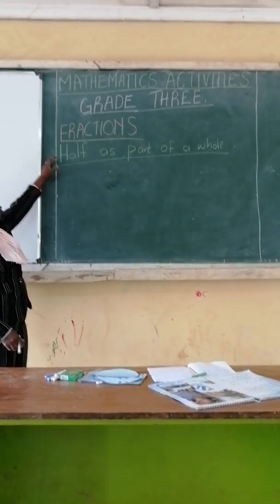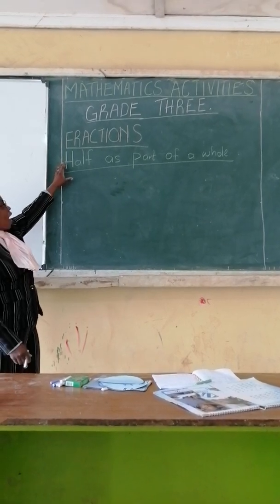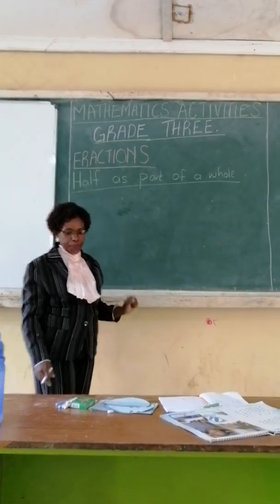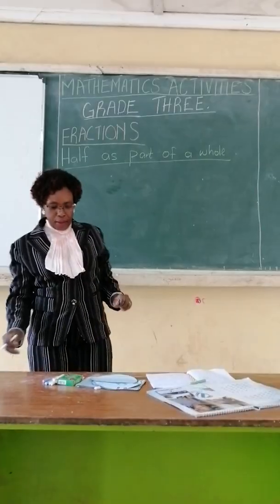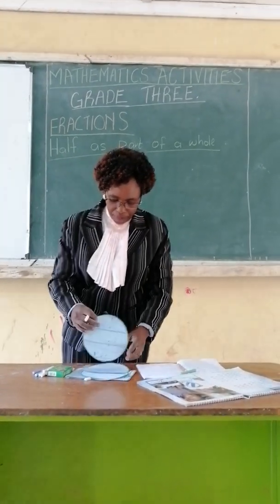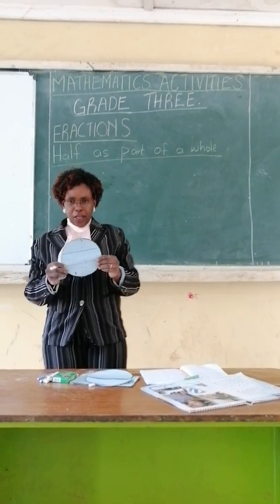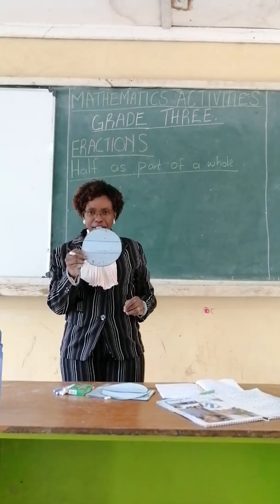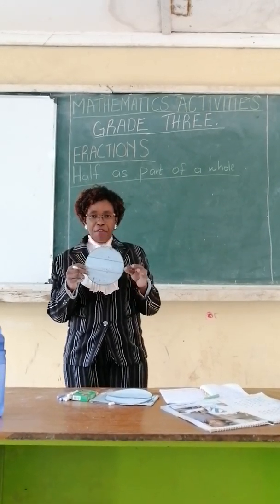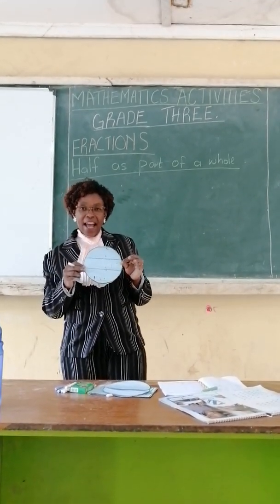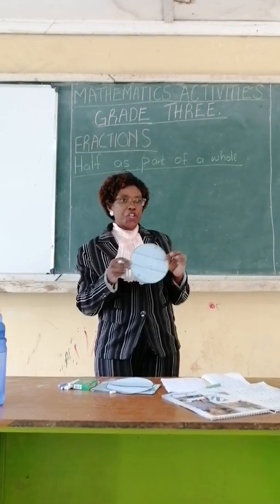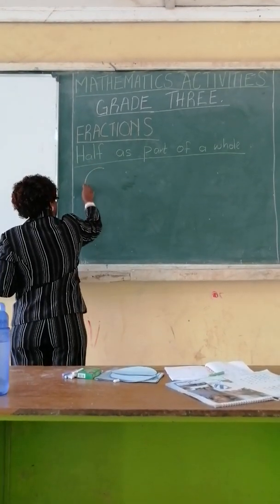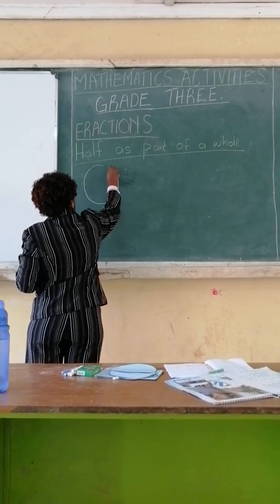And in fractions, we are going to look at half as part over whole. Now, I will use some shapes here. Can you identify this shape? What is the name of this shape? Very good. This is a circle shape. I will draw my circle shape here. That is a circle shape.